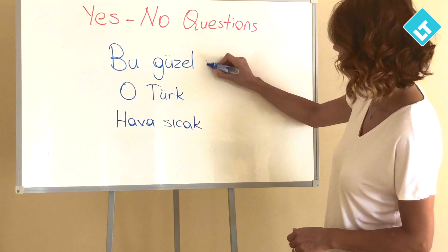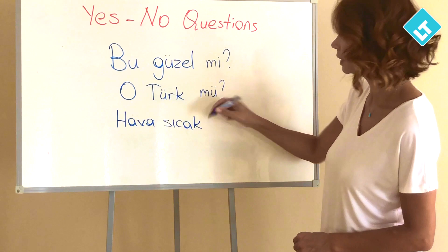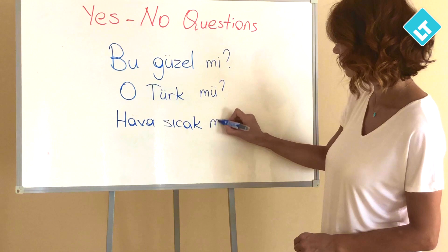Bu güzel mi? — Is this nice? O Türk mü? — Is he or she Turkish? Hava sıcak mı? — Is the weather hot?